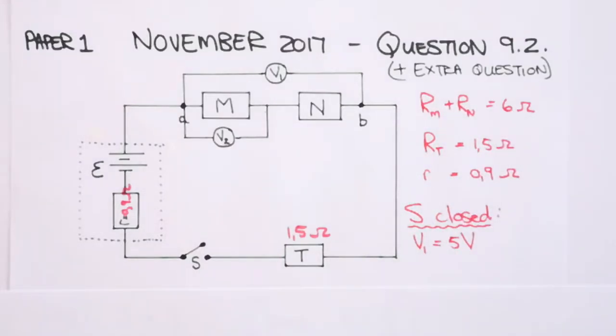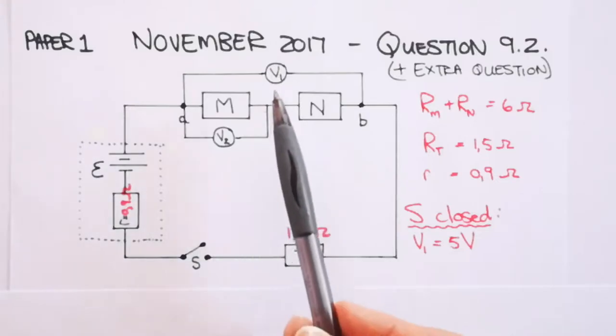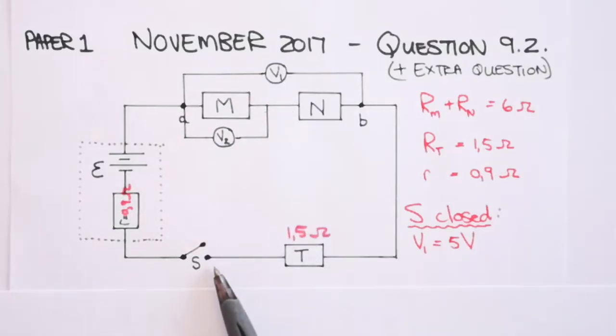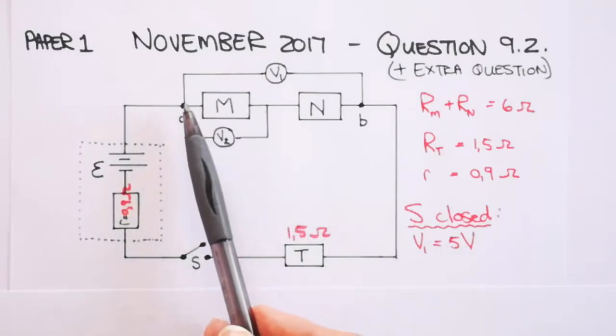They also tell you that the resistance of resistor T is 1.5 ohms. It's always a good idea to write all the information on your sketch when you have your exam paper. Then they tell you when switch S is closed, a high resistance voltmeter V1 across A and B reads 5 volts. So when this switch is closed, current will start to flow in your circuit, so V1 reads 5 volts. So 5 volts is the potential difference between points A and B.